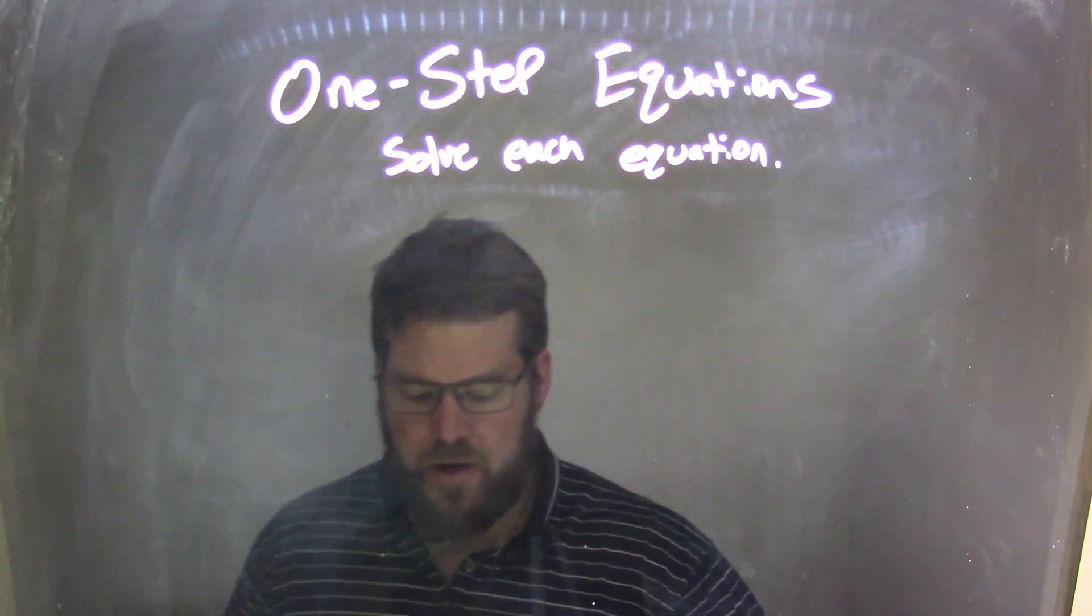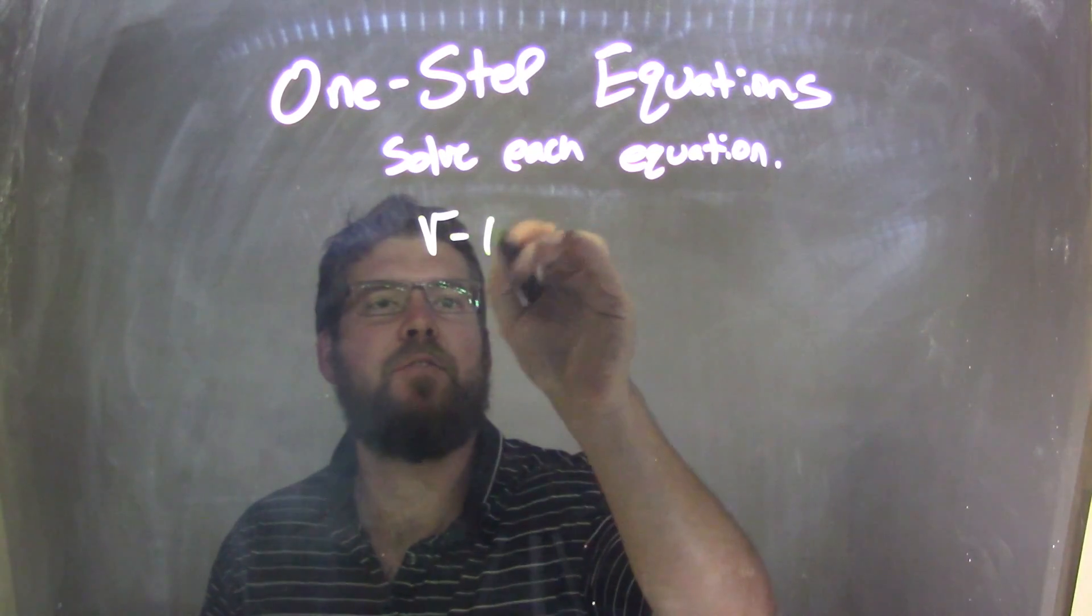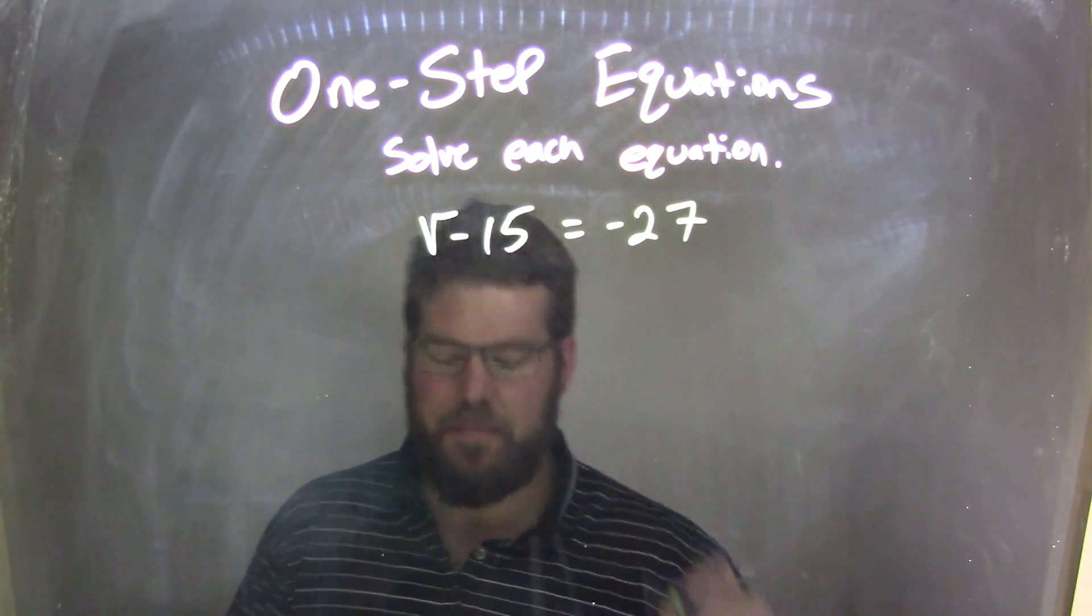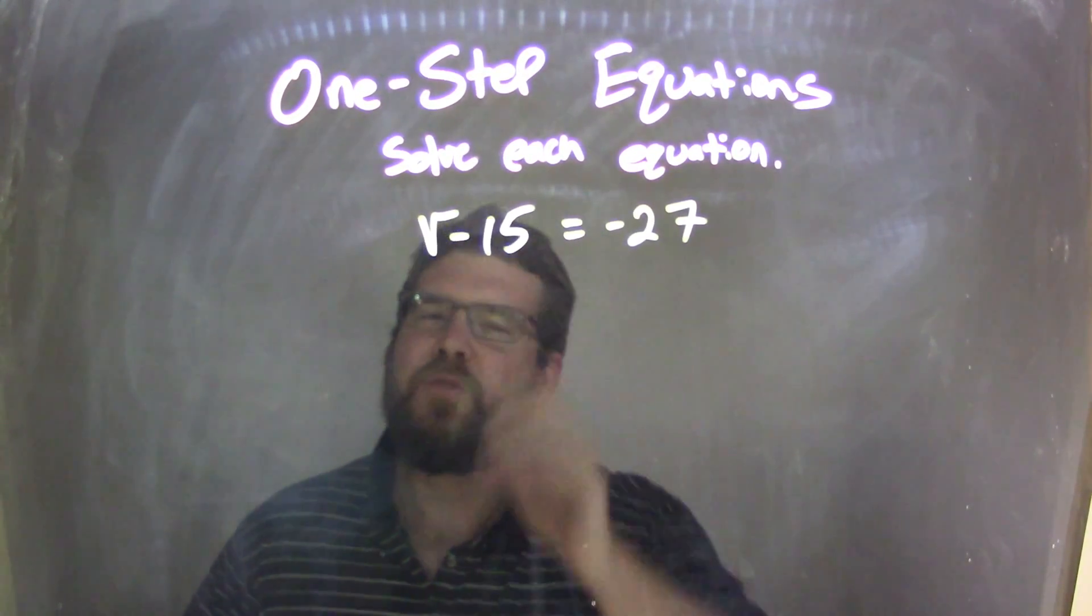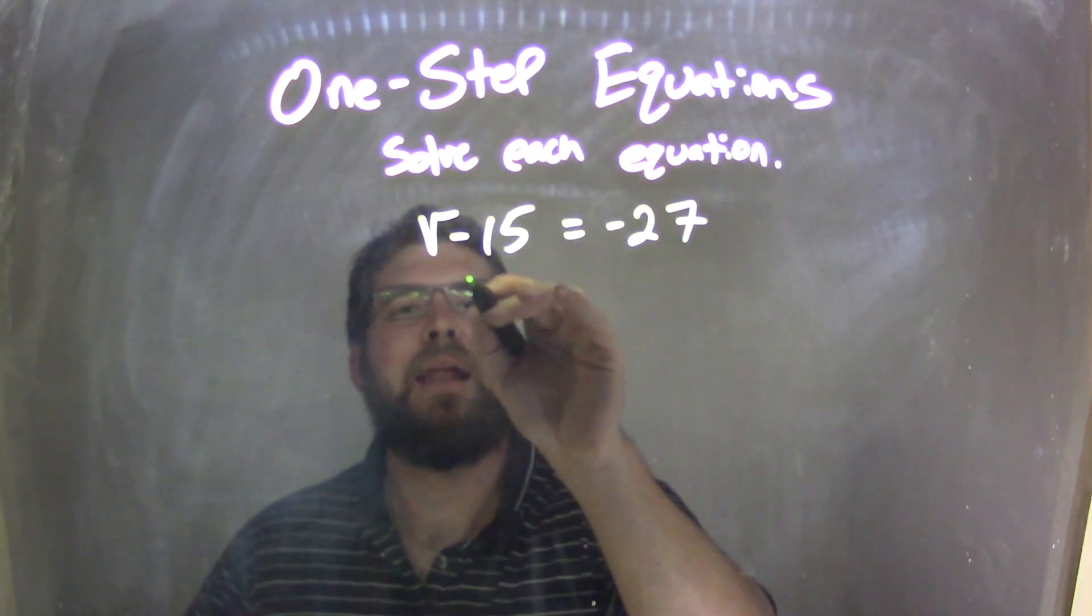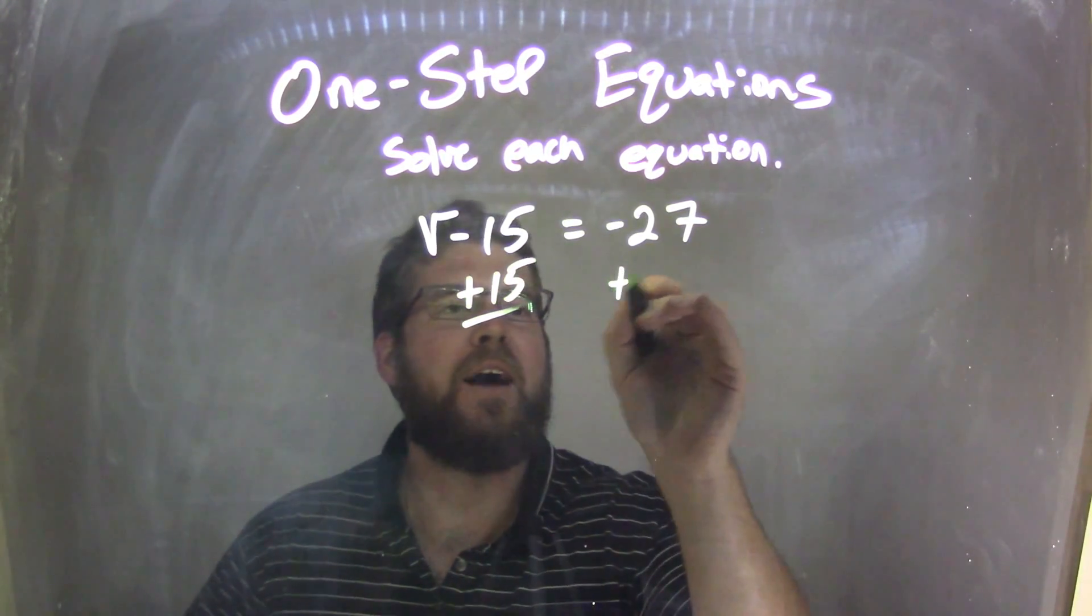So, if I was given this equation, v minus 15 equals negative 27. Well, that minus 15, I've got to think, what's the opposite of subtraction? And that's addition. So I'm going to add a 15 to both sides.